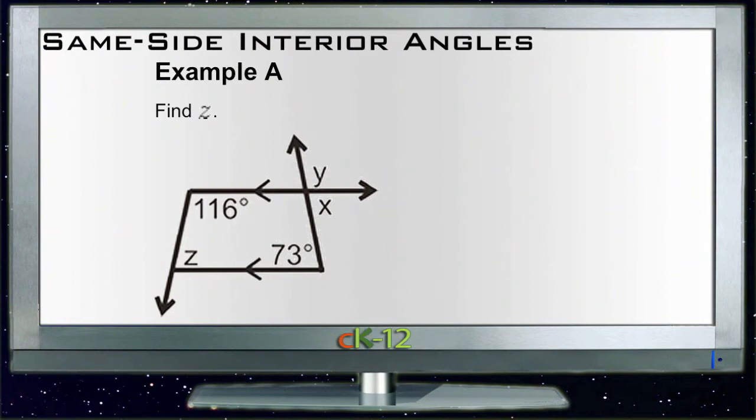Same-side interior angles tell us if we're looking for Z, that Z and 116 degrees must equal 180 degrees total. The same-side interior angles equal 180 degrees.